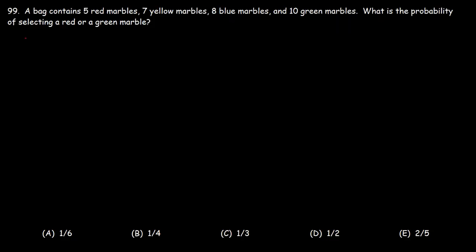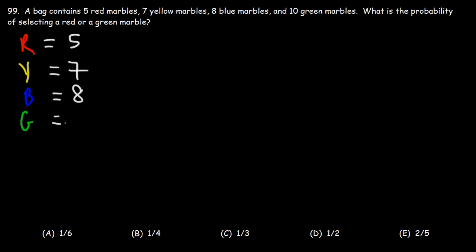Let's begin by organizing the information that we have with all the different colored marbles. So we have 5 red marbles, 7 yellow marbles, 8 blue marbles, 10 green marbles. Now let's get the total: 5 plus 7 is 12, 12 plus 8 is 20, 20 plus 10 is 30.